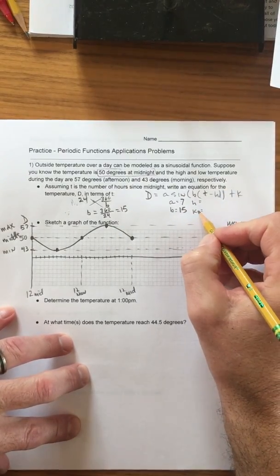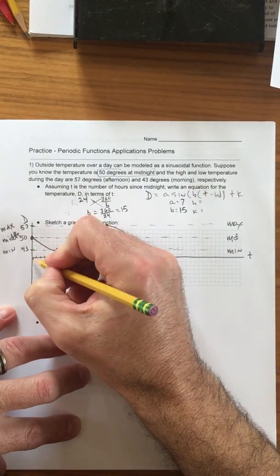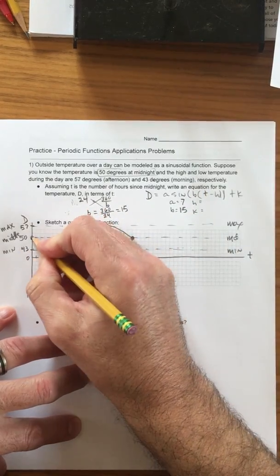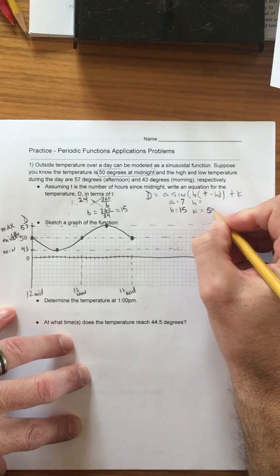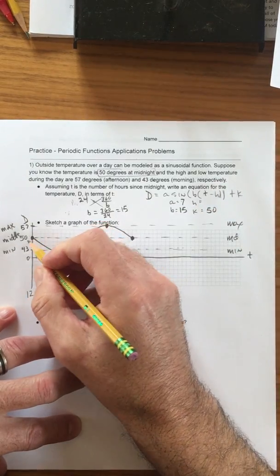Let's do the K value because that's easy. That's the vertical shift. Well, from zero, that's going to be up 50. So from zero to the middle is 50.